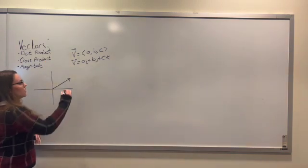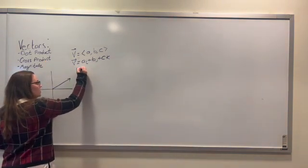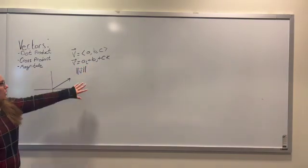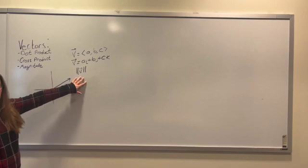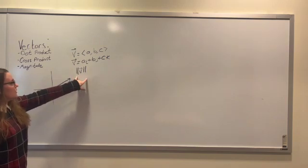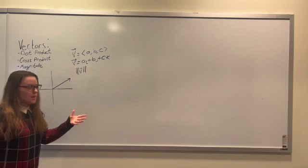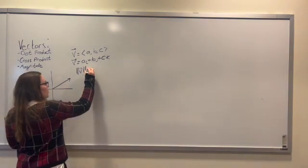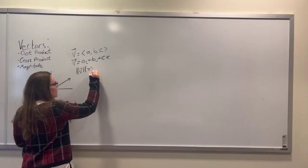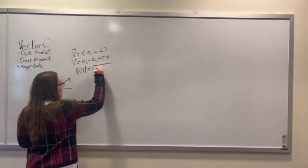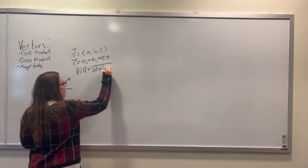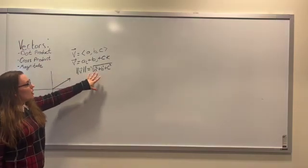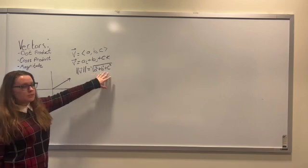Now if we wanted to find the magnitude of some vector, you write it like this. You may come across where the magnitude is written with single lines on either side, but it's usually written with two as to differentiate it from the absolute value symbol. So if we wanted to find the magnitude, we take the square root of each quantity squared. So here, the magnitude of our vector V is the square root of A squared plus B squared plus C squared.